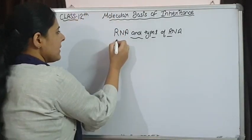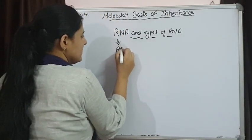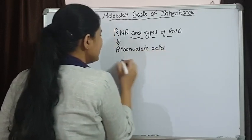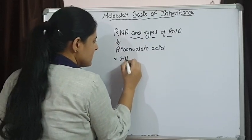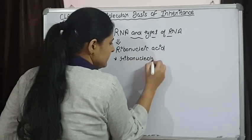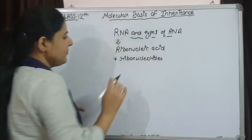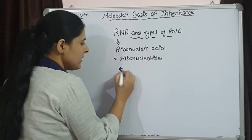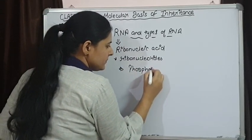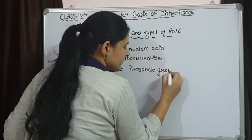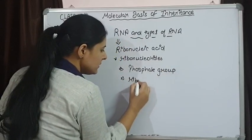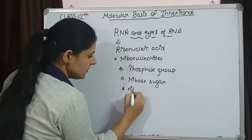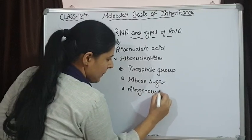RNA is ribonucleic acid and it is also made up of ribonucleotides. If we are talking about ribonucleotides, these nucleotides are having a phosphate group, a ribose sugar, and nitrogenous bases.